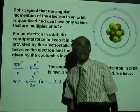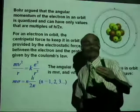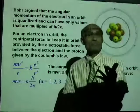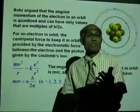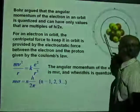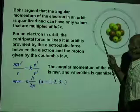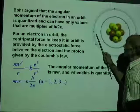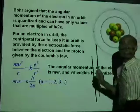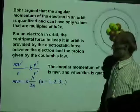We have now used n as a multiple, where n can have the value 1, 2, 3, 4, and so on. That means if an electron is in the first orbit, n will have a value 1. If the electron is in the second orbit, n will have a value 2, and so on.